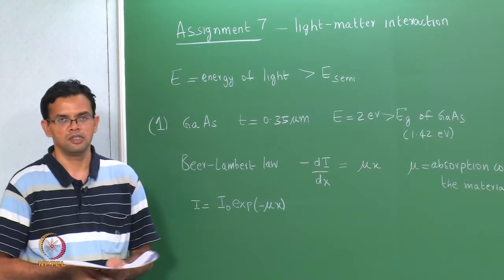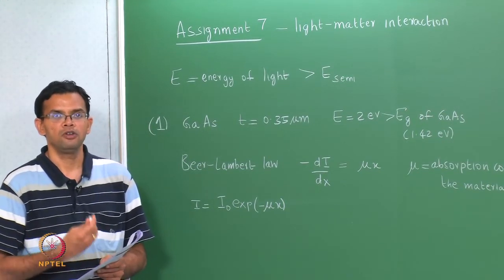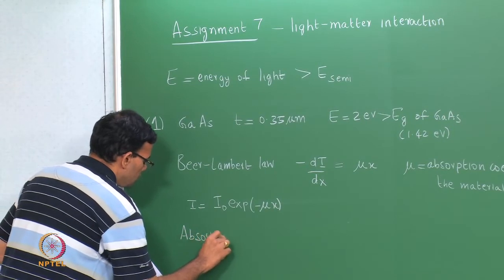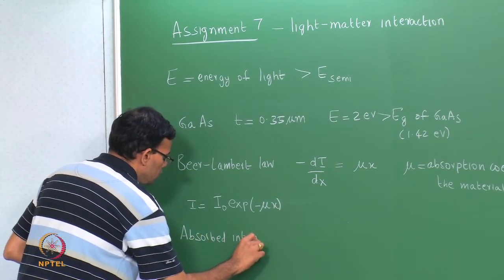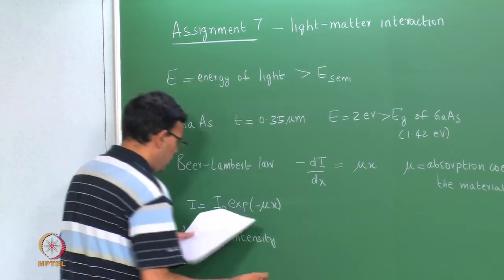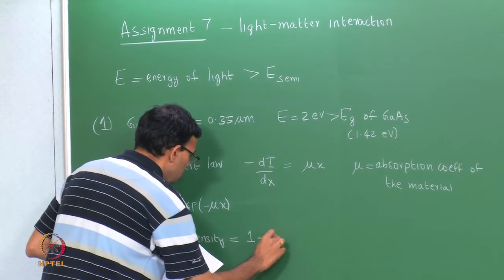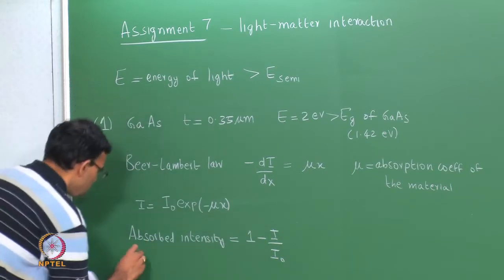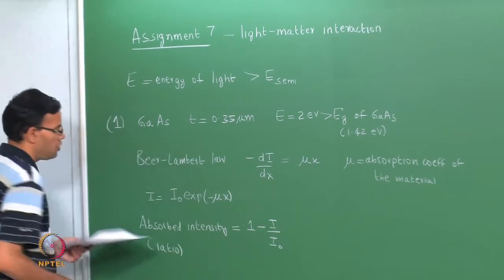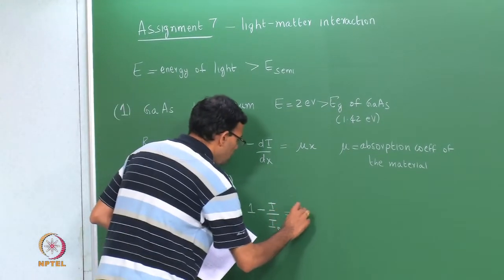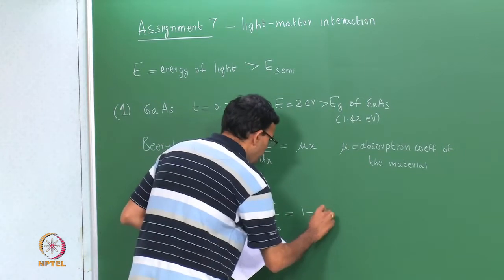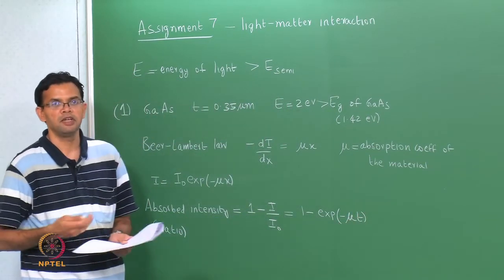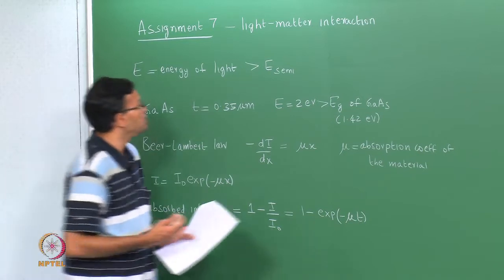Mu depends upon the wavelength of the light. We can integrate this and apply boundary conditions, which gives us I = I₀ · exp(−μx), where I represents the transmitted intensity. If we want to find the absorbed intensity as a ratio, it is 1 − I/I₀, which we can convert to a percentage: 1 − exp(−μt), where t is the thickness of the sample.